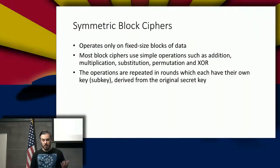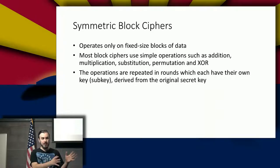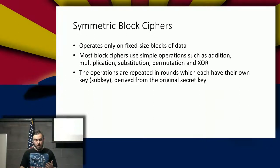Block ciphers operate on a fixed block size. Think DES, Blowfish, or AES. They use simple operations such as addition, multiplication, permutations, and XORs in order to encrypt the data. The operations are repeated in rounds and have their own sub-key derived from the original shared key. AES, for example, has a dozen different combinations of block sizes and key sizes. This is kind of how we derive key sizes — for example, AES-256 is talking about the key size, which is related to the block size and the number of rounds of encryption.